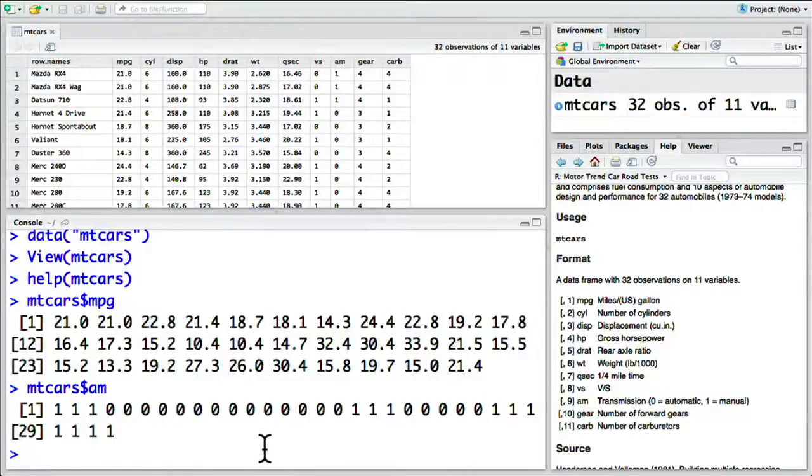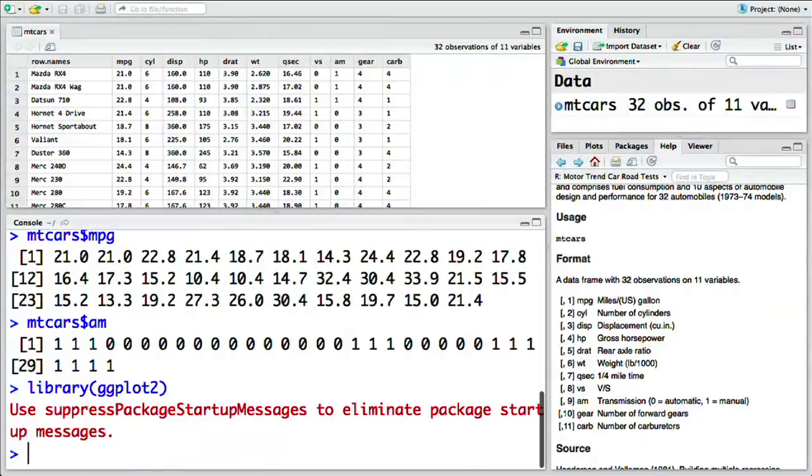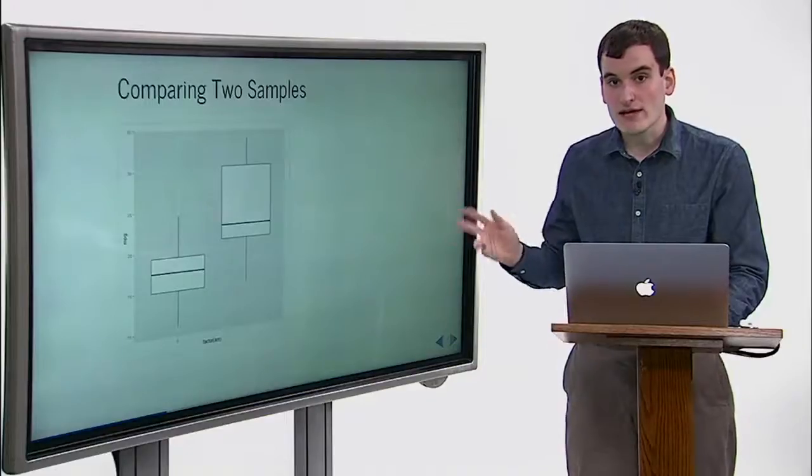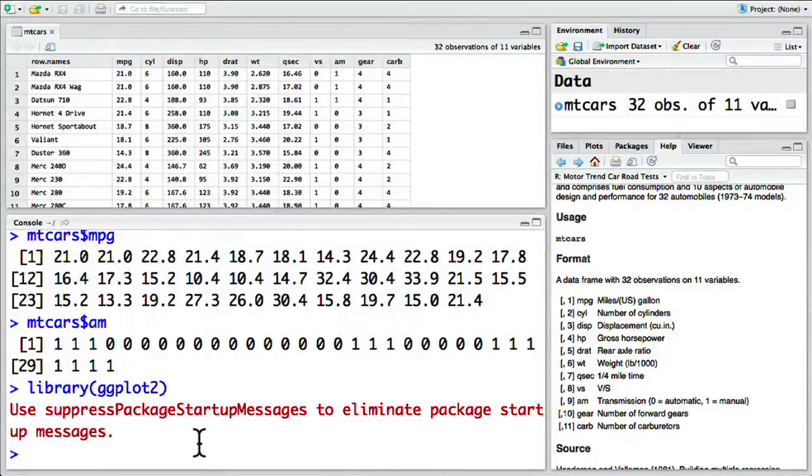To do this, first we load the ggplot package. We do that with library ggplot2. Then we can create a box plot with the following line. As with any ggplot2 call, we start with ggplot open parentheses. Then the data we'll be plotting, mt cars. Then a mapping of the aesthetics. In this case, transmission on the x-axis and miles per gallon on the y-axis. So that's AES on the x-axis factor of AM. Why do we need to turn it into a factor? Because ggplot prefers the x-axis of a box plot to be a factor, that is, any variable that can take one of a finite number of categories as its values, rather than a numeric variable like 0 or 1.